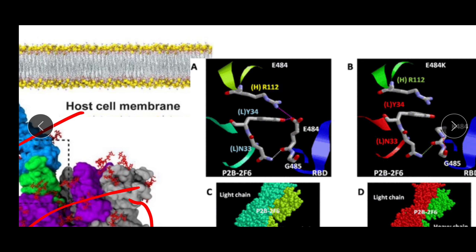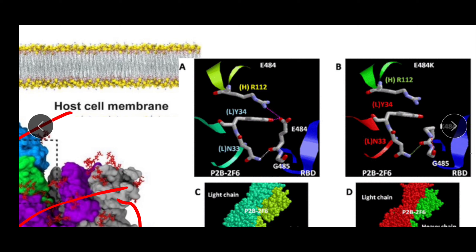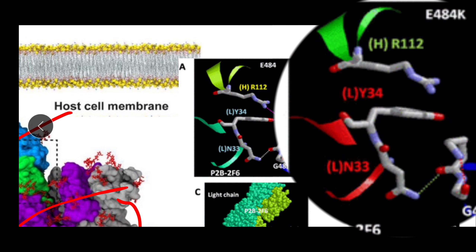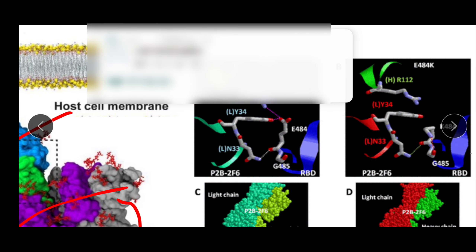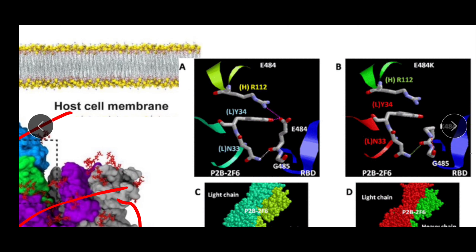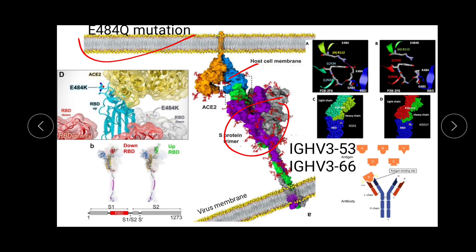When the mutation occurs from glutamic acid to glutamine, the structure changes. Glutamic acid has an OH group while glutamine has a nitrogen group. Because of the nitrogen group in glutamine, the salt bridge bond can no longer form between antigen and antibody — making it a weaker bond. The virus can no longer associate as tightly with the antibody as before, causing it to escape from the immune system. That's why the current strain spreading in India can evade our immune response.